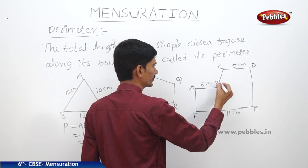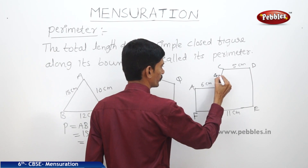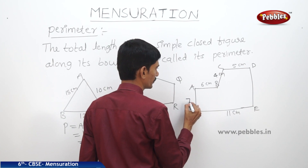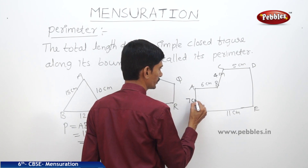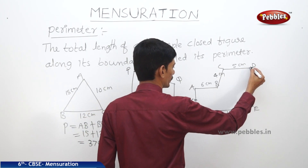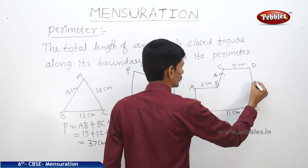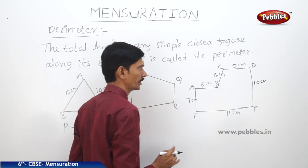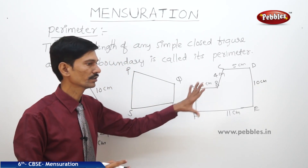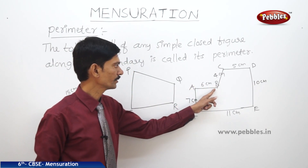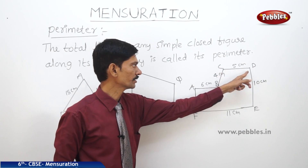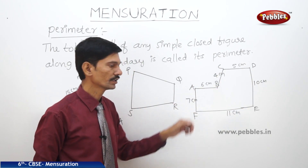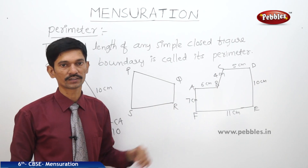With the given measurements — BC is 4 cm, AF is 7 cm, and CD is 10 cm — we find the sum of all sides: AB + BC + CD + DE + EF + FA. Adding all these lengths gives us the perimeter of the figure.